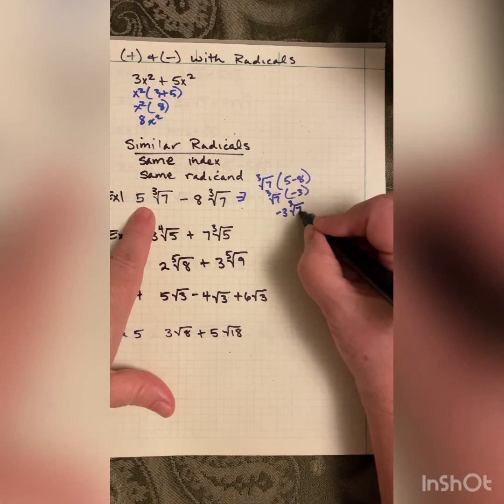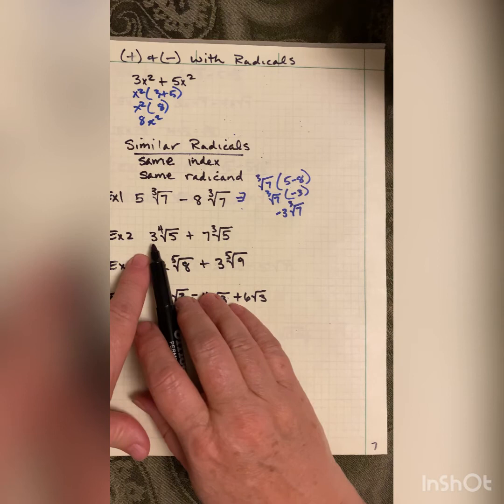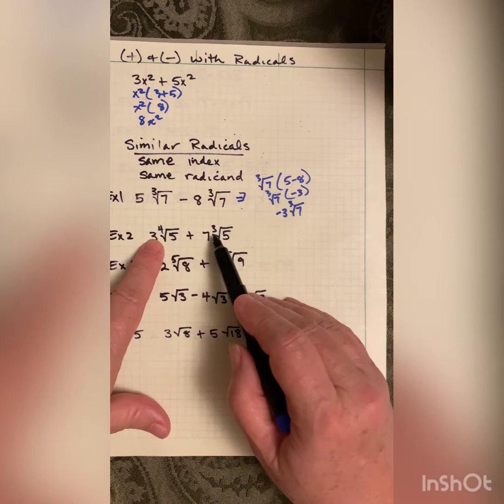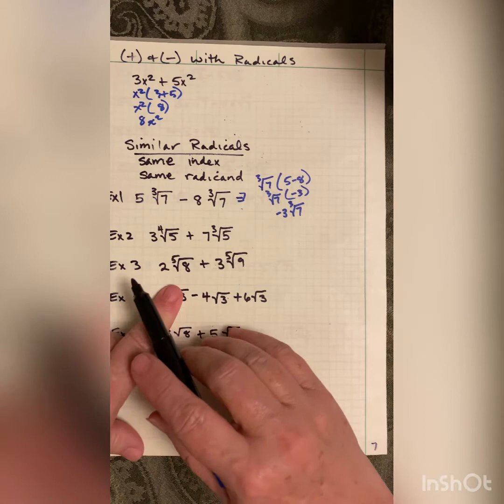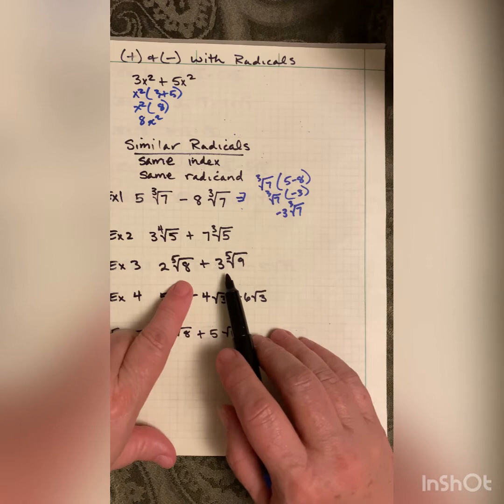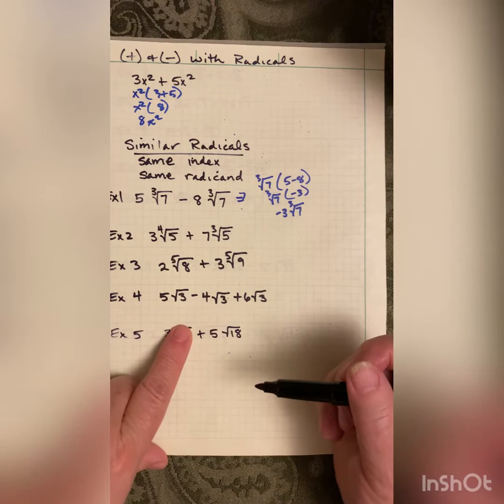Next: 3 times the 4th root of 5 plus 7 times the cube root of 5 — this one doesn't qualify because the indexes are different (4 and 3), so we're done; walk away. Then 2 times the 5th root of 8 plus 3 times the 5th root of 9 — we can't combine those either because the radicands are different, so we walk away.